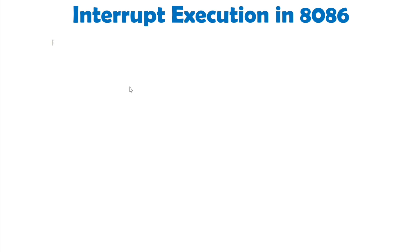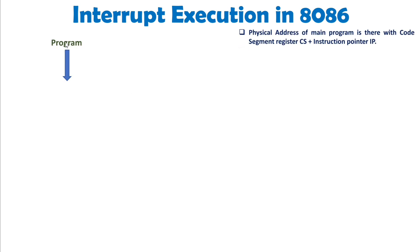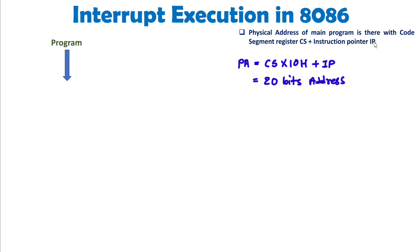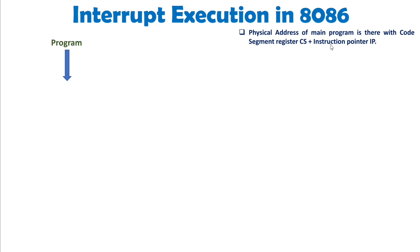Let's say we are executing a main program. The main program has a physical address determined by the code segment register CS and the instruction pointer IP, calculated as CS × 10 hex plus IP. The higher address of the main program is held by CS and the lower address is held by IP, which is the offset pointer.